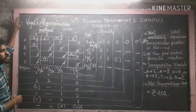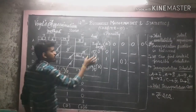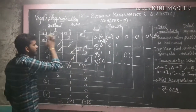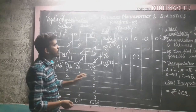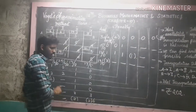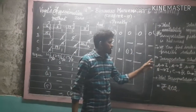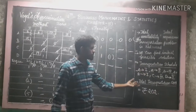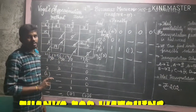To summarize Vogel's Approximation Method: first, find the penalty for each row and column by subtracting the two least values. Identify the highest penalty, then allocate to the cell with the least cost in that row or column. Repeat this for every allocation until all supply and demand is satisfied. Finally, write the transportation schedule and calculate the total transportation cost by multiplying allocations by their costs. That is Vogel's Approximation Method. Thank you.